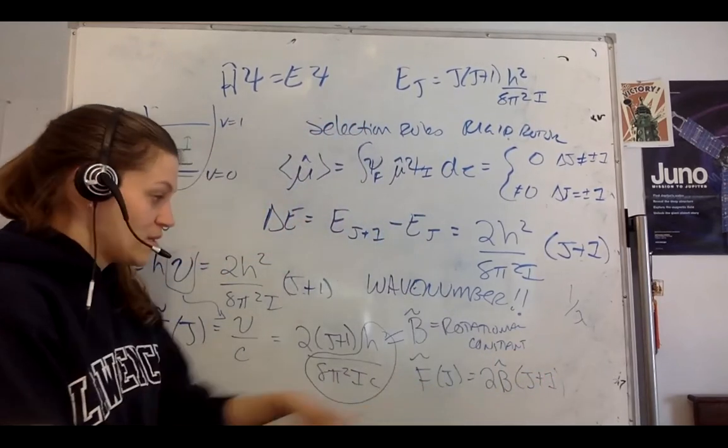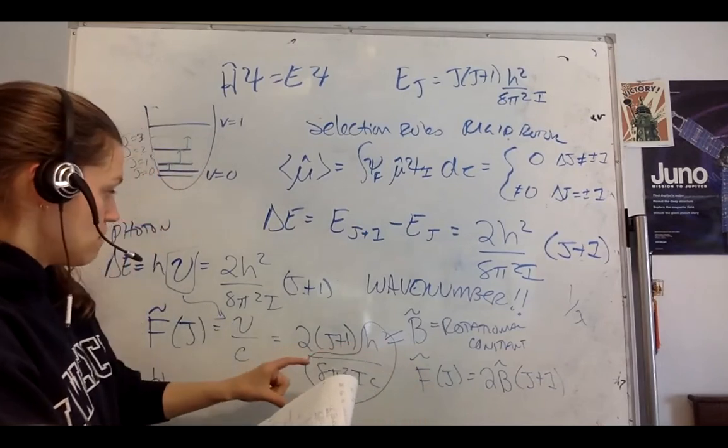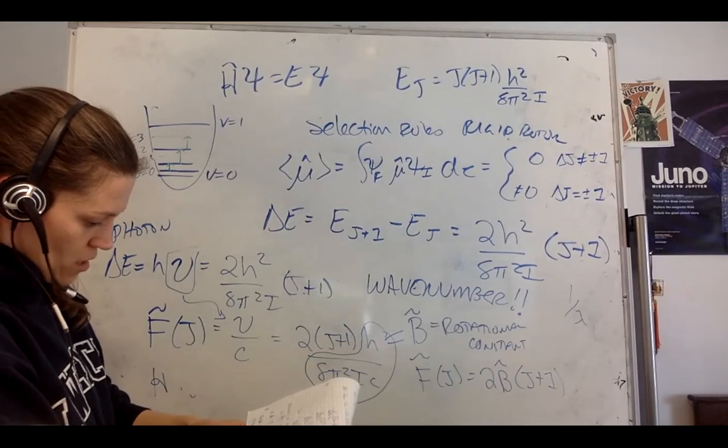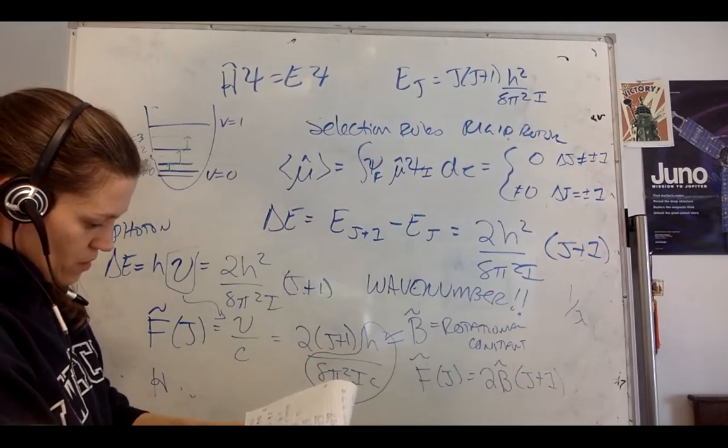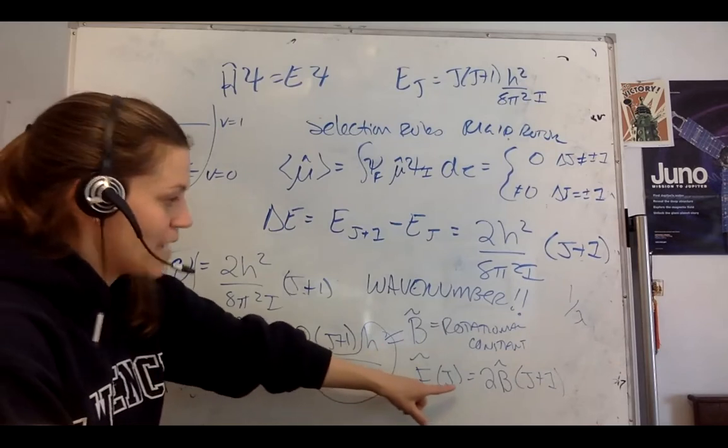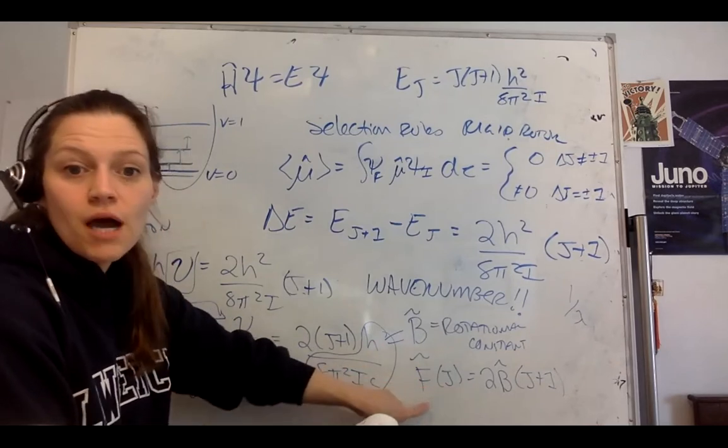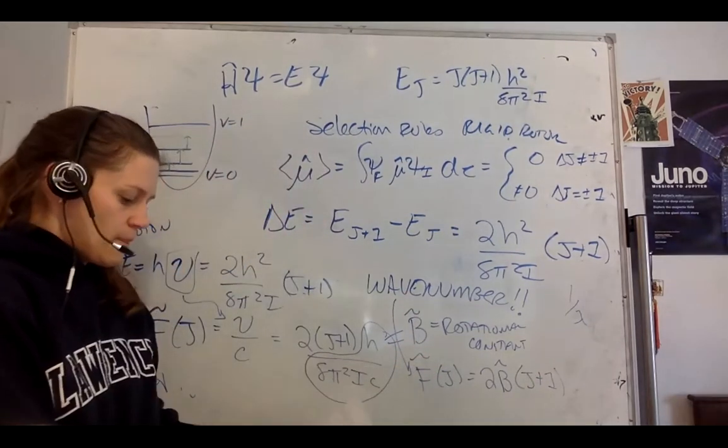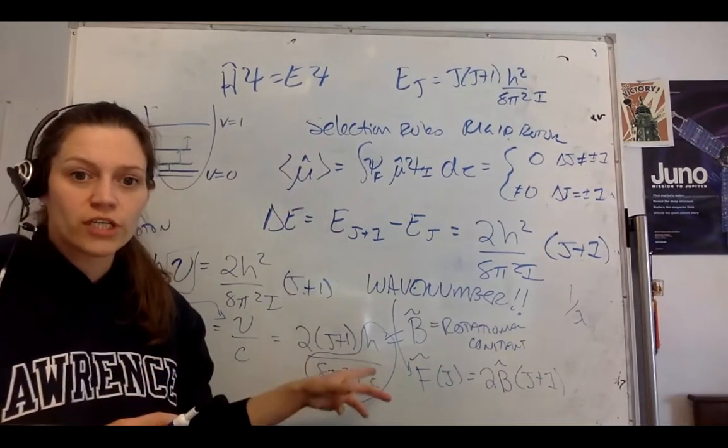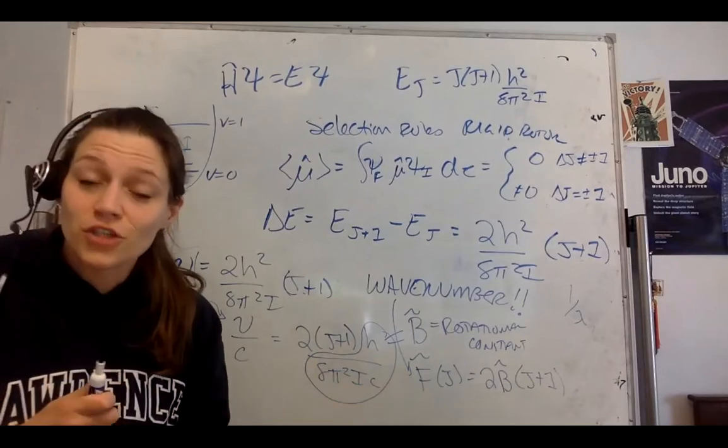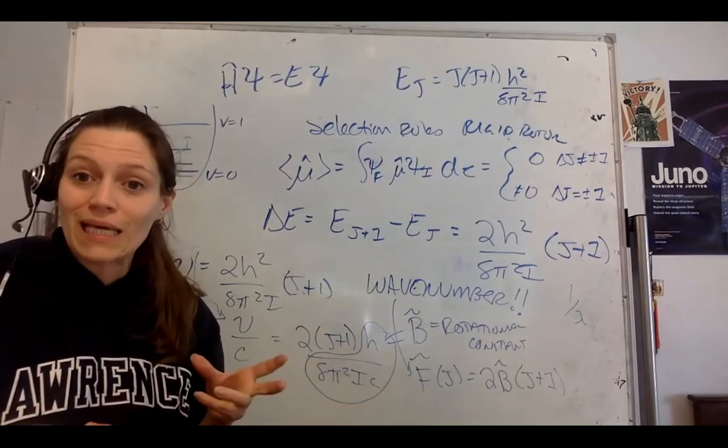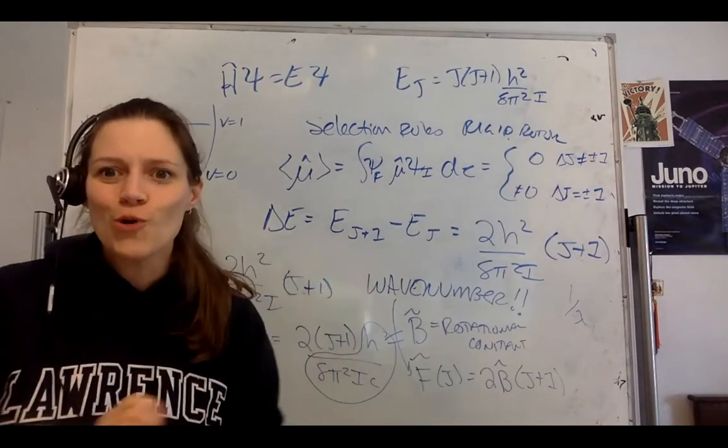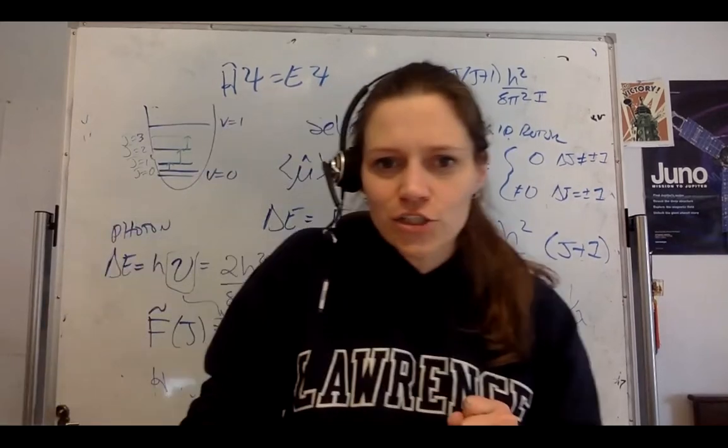When I multiply this by hc, I get that in joules, but this is in wave number. The rotational constant is a very important parameter. You'll be determining the rotational constant B for the HCl and DCl problem, which I will show you. Here's some spectra.